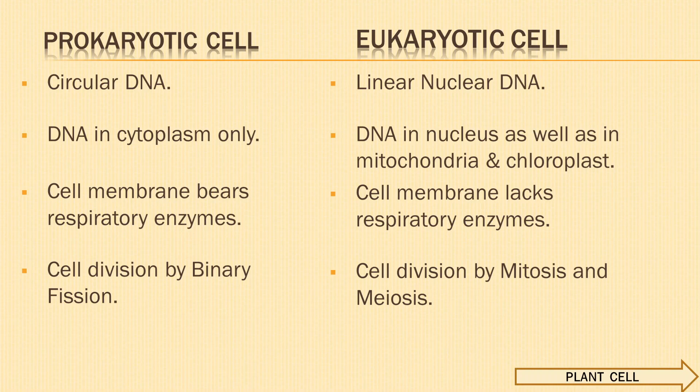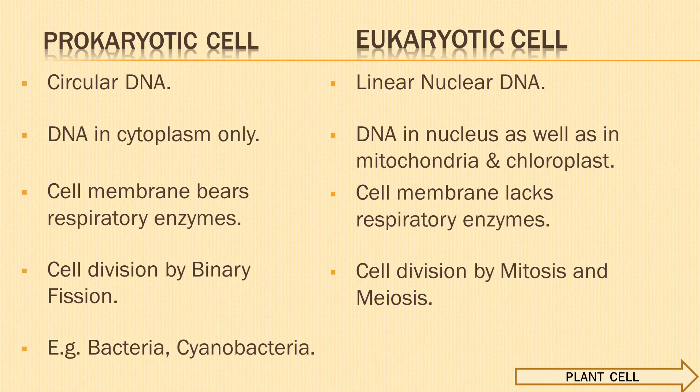Let us pause to revise and relearn the concepts about prokaryotic and eukaryotic cells: nucleoid, nuclear region, nucleolus, chromosomes, mesosomes, type of DNA and where it is present, mitochondria and chloroplasts as semi-autonomous organelles, respiratory enzymes in prokaryotes, and cell division. Examples of prokaryotic cells are bacteria and cyanobacteria; examples of eukaryotic cells are humans and flowering plants.